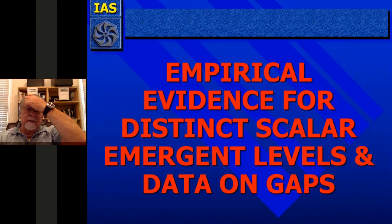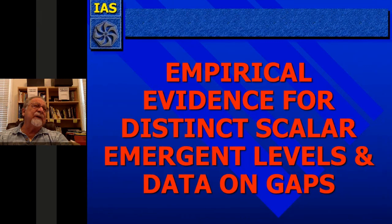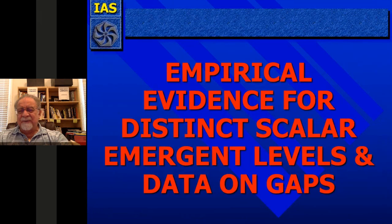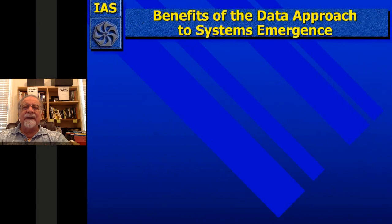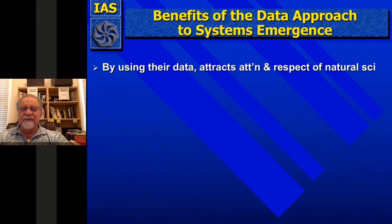Let's take an empirical pause and look at the empirical evidence for distinct scalar emergent levels. I want to talk about the benefits of the data approach to systems emergence. By using real data, it attracts attention and respect of the natural sciences because it constrains modeling, like all data is supposed to do. The whole history of humans can be taken as a gradual understanding that humans perceive things erroneously at first, and we need investigations like experiments to discipline our thinking.